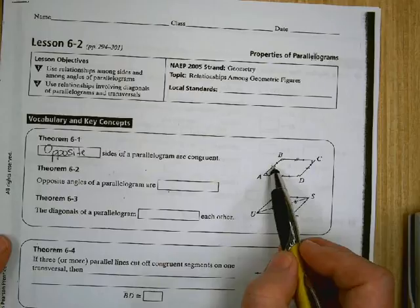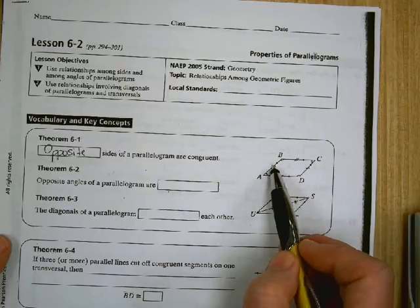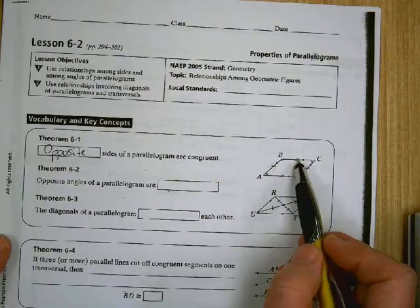The hash marks, this one has one and this one has one, tells you that these are congruent. This one has two and this one has two.